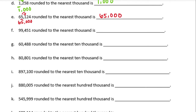99,451 rounded to the nearest thousand. The thousands place is the nine. Next to it is a four — that's four or lower — so the nine stays the same and everything turns to zeros except what was in front, which stays the same. That becomes 99,000.